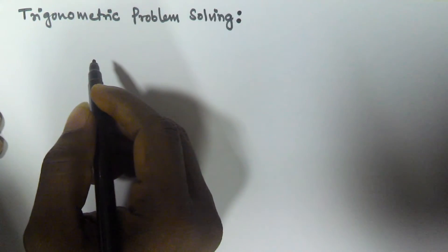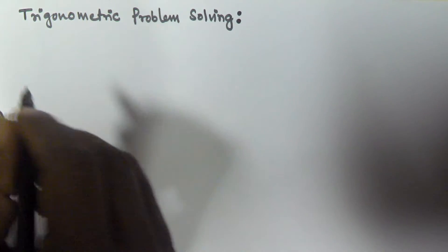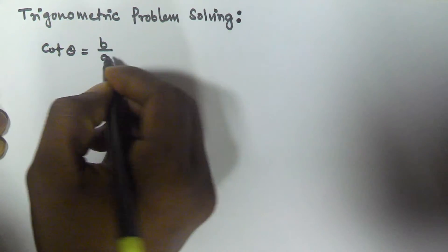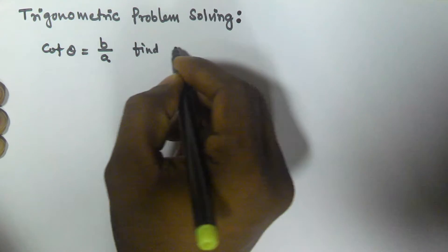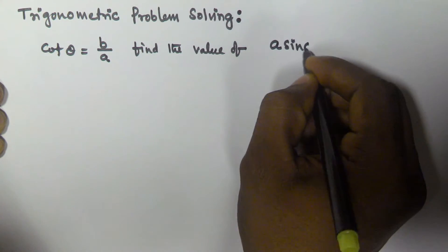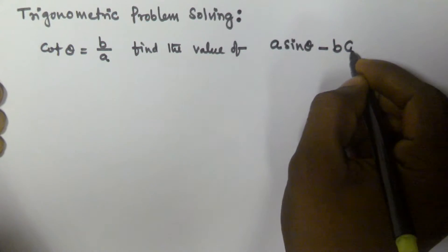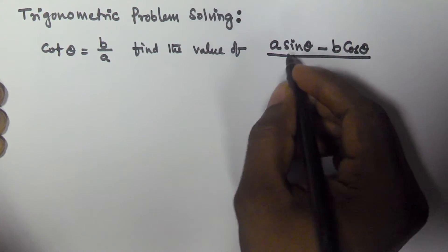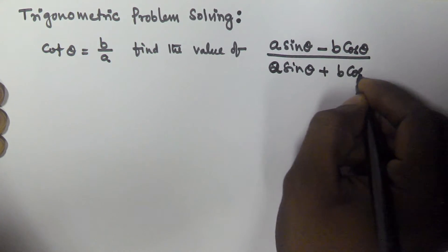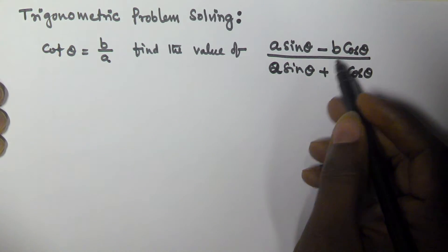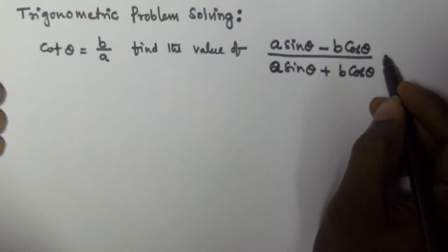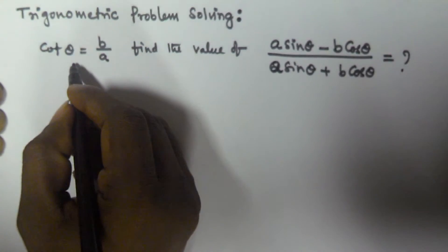Hello friends, in this video we will see another problem related to trigonometry. The problem is: if cot theta equals b by a, find the value of a sin theta minus b cos theta, divided by a sin theta plus b cos theta. So we have to find the value of this expression.